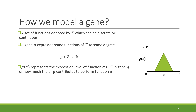In our framework, we model a gene by considering a set of functions F, which can be discrete or continuous, and a gene g expresses some functions of F to some degree. For example, g(alpha) represents the expression level of function alpha — in other words, how much g contributes to performing function alpha. To make it simple, we visualize this with a triangle, where the x-axis represents the function and the y-axis represents the expression level.